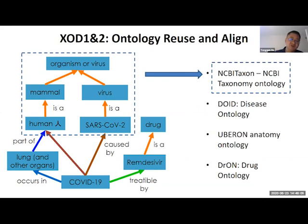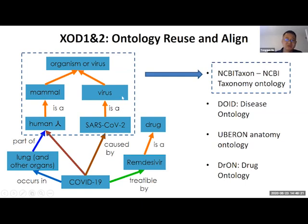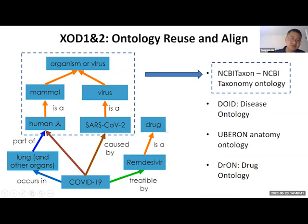Let me show why these things are important with a COVID-19 example. If you want to build a small ontology, you don't have to start from scratch—and if you do start from scratch, people won't understand you. There are ontologies you can use: the NCBI taxonomy ontology for taxonomic IDs, disease ontology, anatomy ontology, and drug ontology. These other ontologies define those terms very well and may even provide relations.